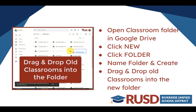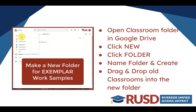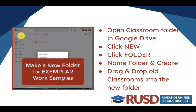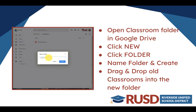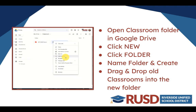Last year's old classes are red for me because I won't need to visit those very often next year. Then when you're ready to create your exemplar folder, again click New and click Create and name your folder. You can also color that folder because you will be visiting it next year.